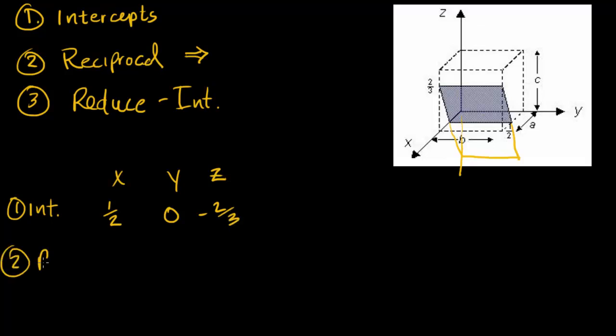Step two: we take the reciprocal. So that's two, zero, negative three over two. And finally, we reduce.